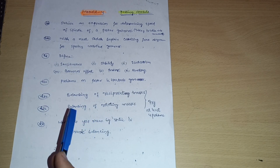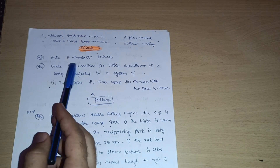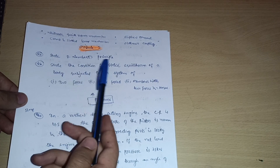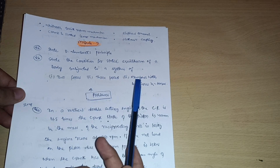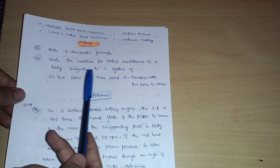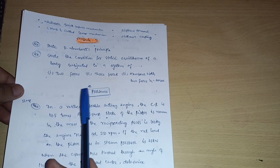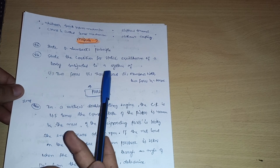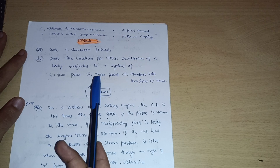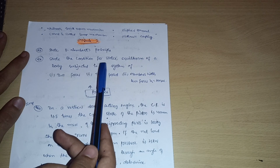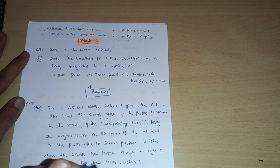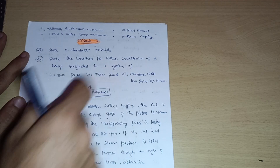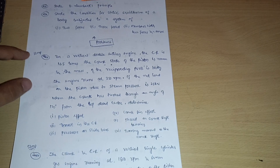In Module 2, cover questions like: state D'Alembert's principle; state the conditions for static equilibrium of a body subjected to a system of two forces, three forces, members with two forces and a torque. Once you go through these conditions of static equilibrium, you can easily tackle the problems of static force analysis. I have handwritten notes with around 10 questions from static analysis. You can go through those problems — they are simpler, but you should remember and learn these conditions of static equilibrium.